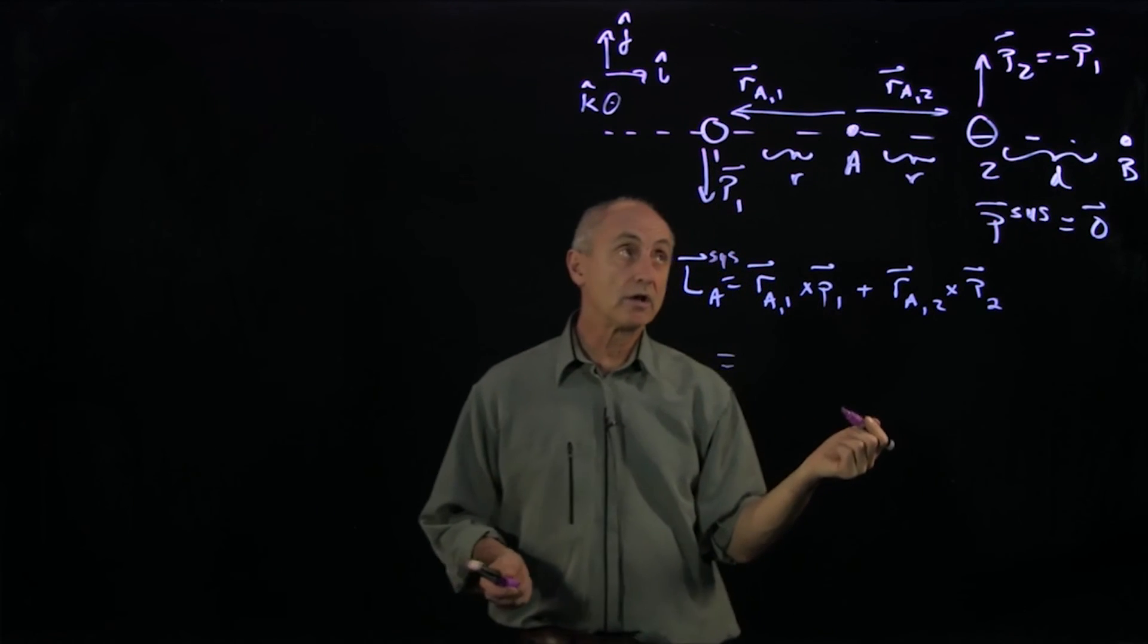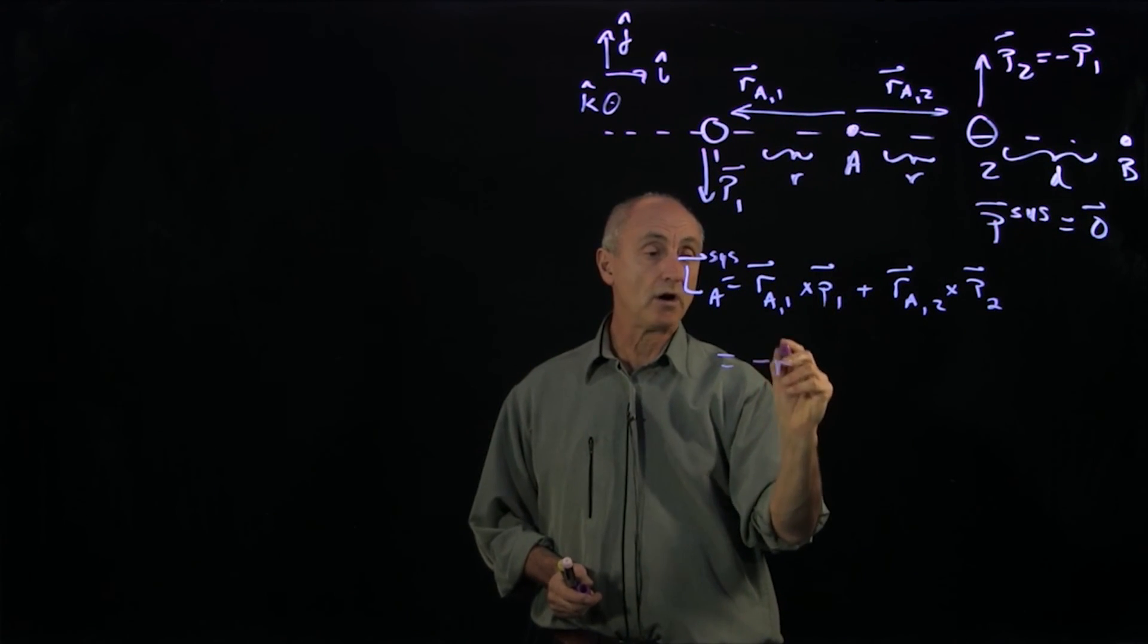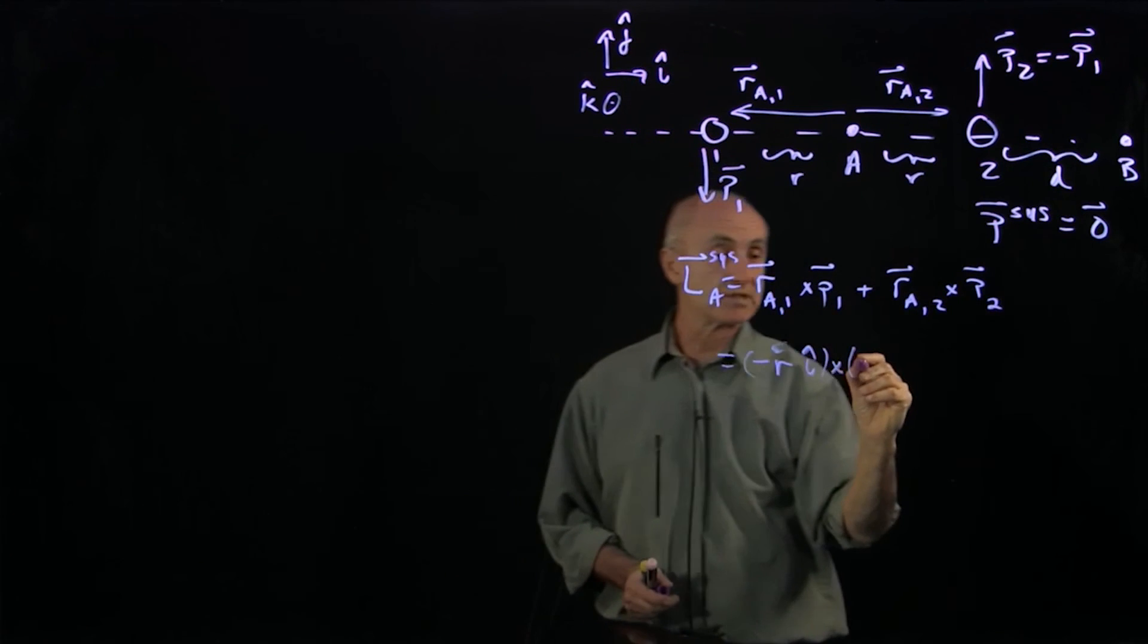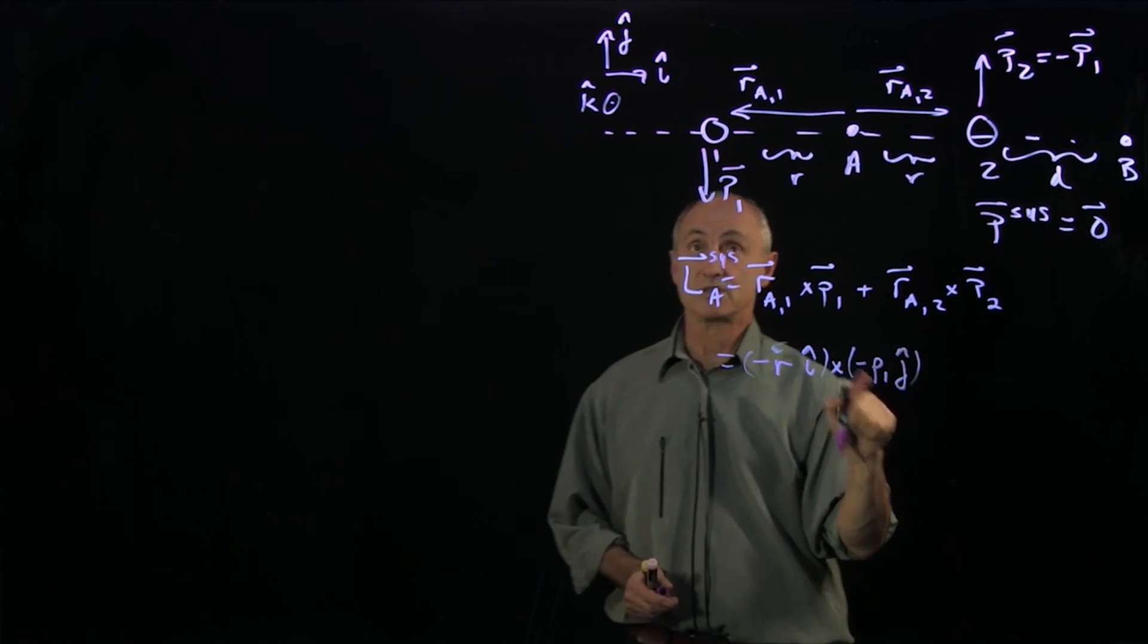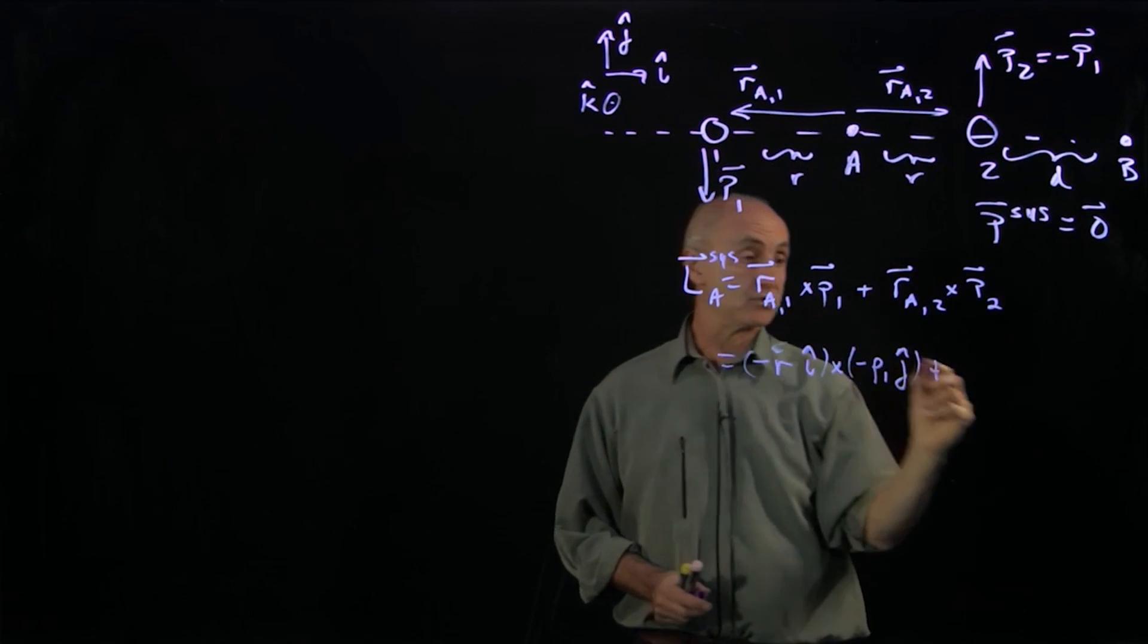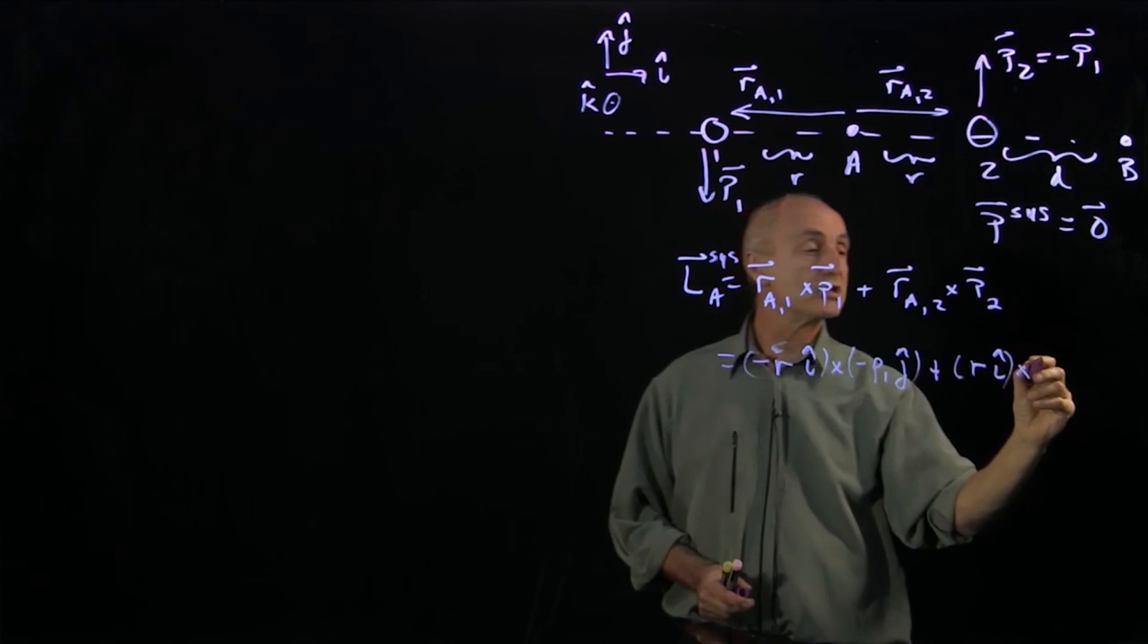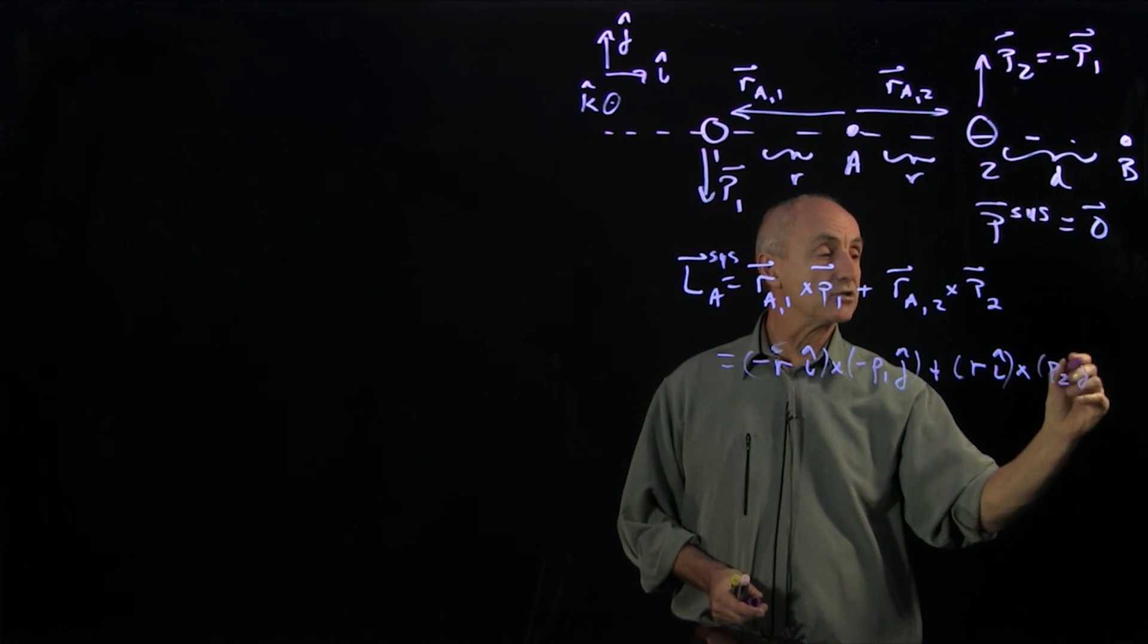So now it's not hard at all to write these out. R_A1 is minus R in the i hat direction, cross P1 is down, that's minus P1 in the j hat direction, where P1 is the magnitude. And R_A2 is in the plus i hat direction, so that's R i hat. And I'm crossing that with P2, which I'll write right now as P2 in the j hat direction.